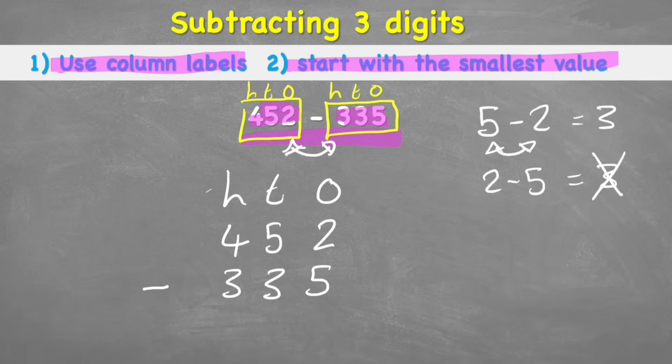And I can check that I've put these in the right columns by checking I have a 2 and a 5 in my 1s, a 5 and a 3 in the 10s, and a 4 and a 3 in the 100s.